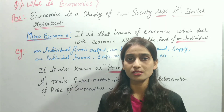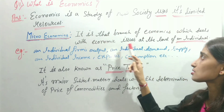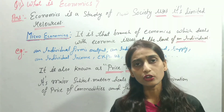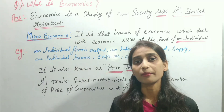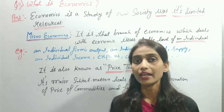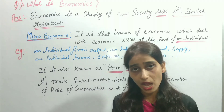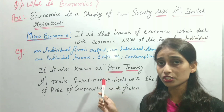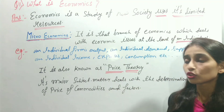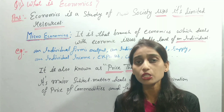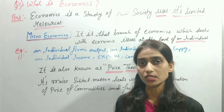In today's video we will discuss microeconomics. Microeconomics is that branch of economics which deals with economic issues at the level of an individual. Micro means small, and economics you already understand. Basically, in microeconomics, individual unit analysis is used — things at the individual level such as individual firms' output, individual demand, individual supply, individual production, individual consumption, individual expenses, individual income, and so on. It is also known as price theory.